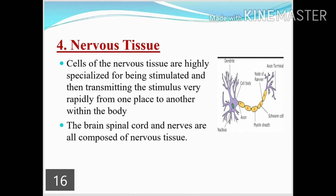The fourth type of animal tissue is nervous tissue. These tissues are highly specialized for being stimulated and then transmitting that stimulus very rapidly from one place to another. Nervous tissues acquire the stimulus and are capable of rapidly transmitting it. Whatever stimulus arises from any part of the body goes directly to the brain, which then responds. Nervous tissue is mostly present in the brain, spinal cord, and nerves, because nerves are also made up of nervous tissues.